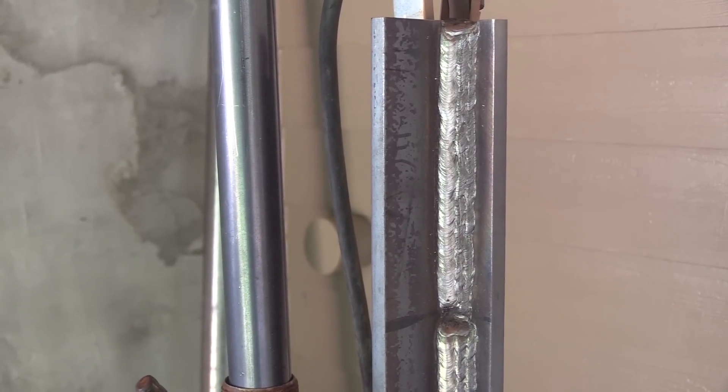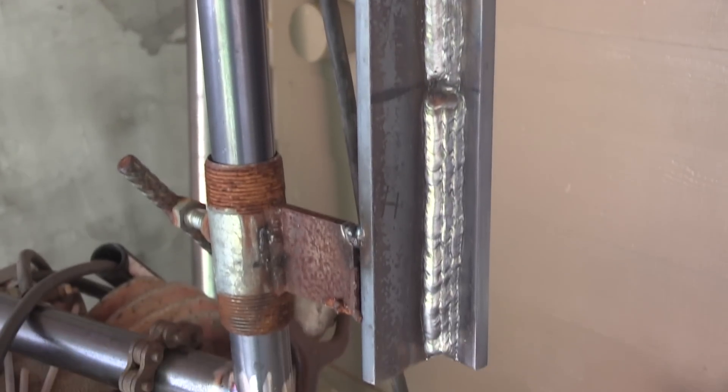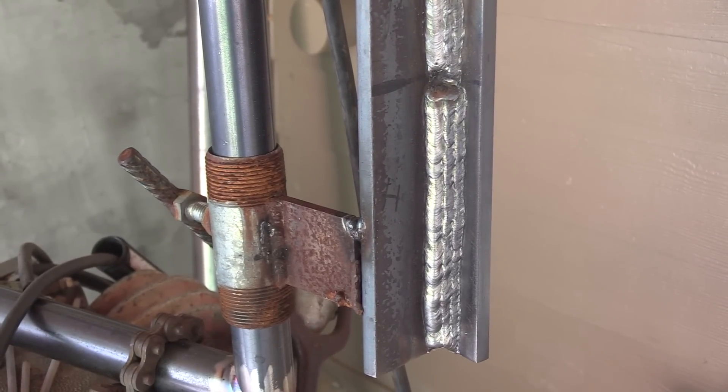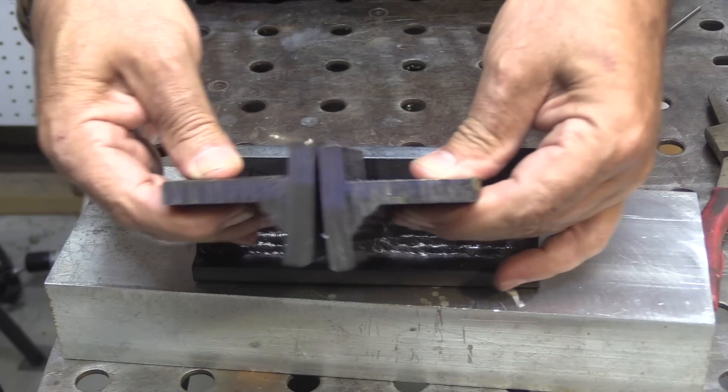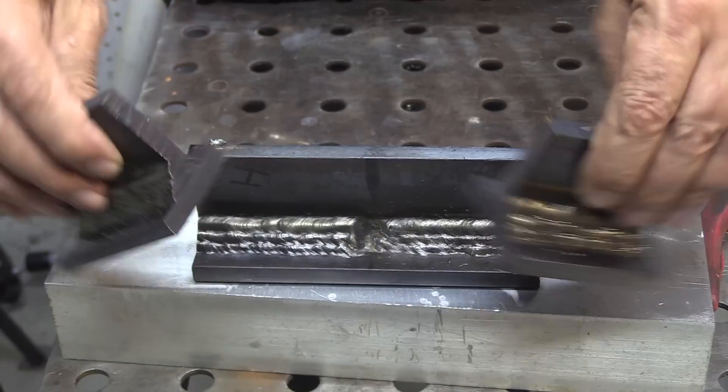So there's the ESAB rod at the top. There's the Hobart on the bottom. Not a huge difference between the two as far as appearance, but we're going to cut and etch and see if there's any difference on penetration and internal quality, etc.